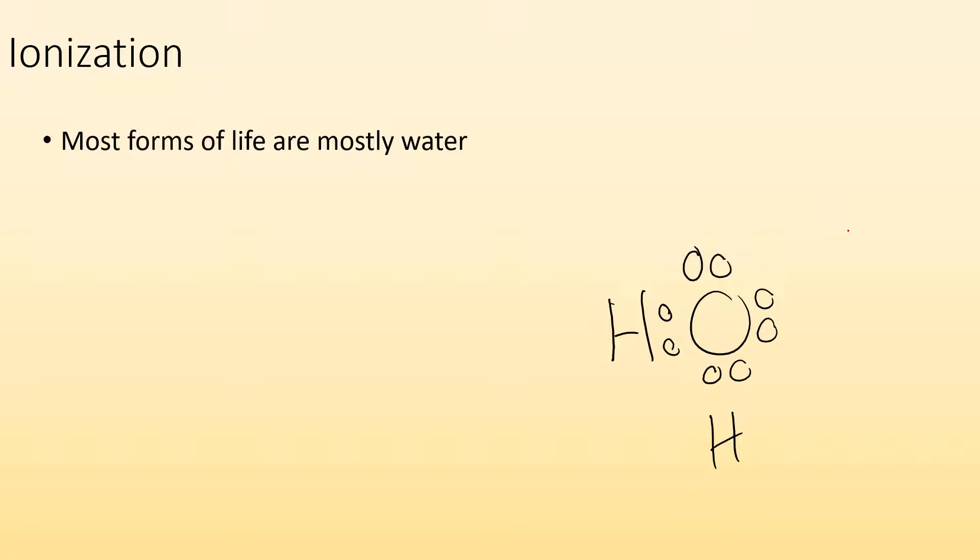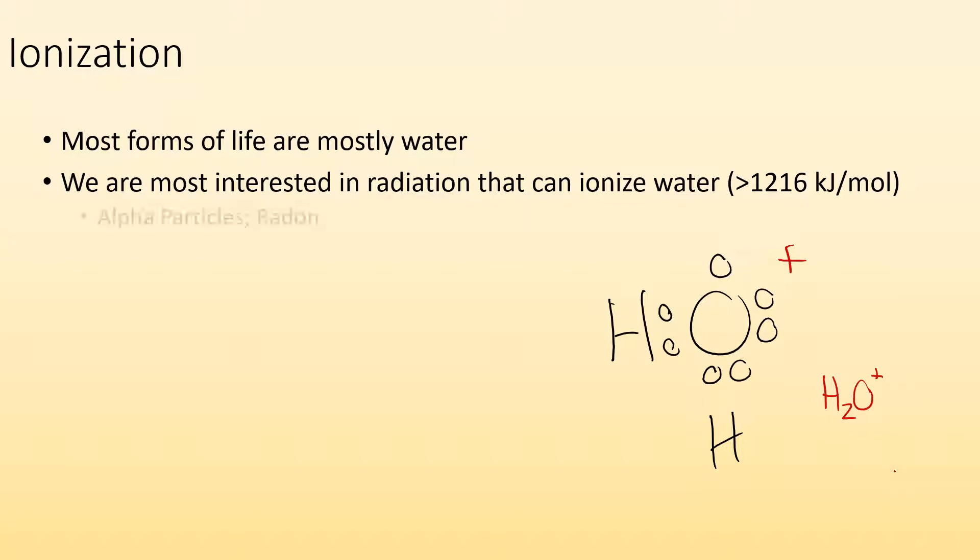So let's talk about ionization. Most forms of life are mostly water. So when we're talking about what kind of ionization radiation are we interested in, we're interested in the kind that can ionize water. The ionization energy for water is 1216 kilojoules per mole. So the radiation has to have more energy than that in order to ionize water. The energy is going to come in and ionize water, kick off one of those electrons, and you're left with H2O plus ionized water. Things that'll do that would be alpha particles. If you've heard of radon gas, radon will give off alpha particles that can ionize water. Beta particles, if you've ever talked about carbon dating, that carbon-14 that naturally occurs at certain levels can ionize water, as well as gamma rays, X-rays, stronger UV rays.